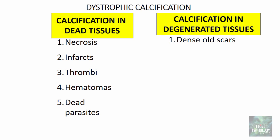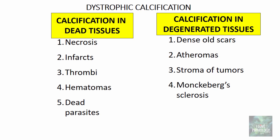In degenerated tissues, you can find calcification in dense old scars, in atheromas, and in the stroma of tumors whether benign or malignant. In benign tumors, for example leiomyomas. In malignancies, you can find calcification in breast carcinomas and in papillary carcinomas. Next is Monckeberg's medial sclerosis, where calcification is seen in the tunica media of muscular arteries, particularly the uterine arteries in elderly females.